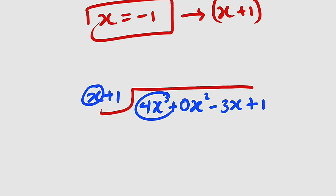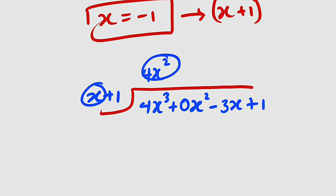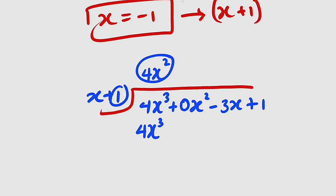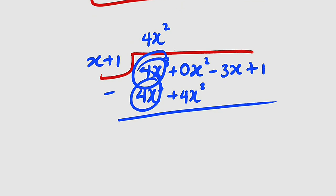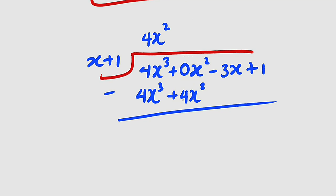Multiply 4x squared by x plus 1 to get 4x cubed plus 4x squared. Subtract from the dividend: 4x cubed minus 4x cubed is 0, and 0x squared minus 4x squared gives negative 4x squared.